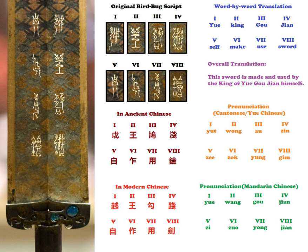Worm seal script, also referred to as Niao Zhuan or Niao Shu, is a style in which some or all the strokes are winding, thus producing a worm-like character, but there is no additional bird shape.